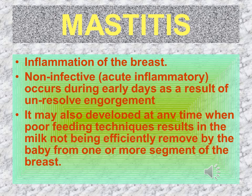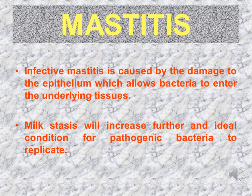Mastitis is an inflammation of the breast. Non-infective or acute inflammatory mastitis occurs during the early days as a result of unresolved engorgement. It may also develop at any time when poor feeding techniques result in milk not being efficiently removed by the baby from one or more segments of the breast. Due to poor feeding techniques, milk is retained inside the breast and may cause mastitis. Infective mastitis is caused by damage to the epithelium which allows bacteria to enter the underlying tissues, and milk stasis creates ideal conditions for pathogenic bacteria to replicate.